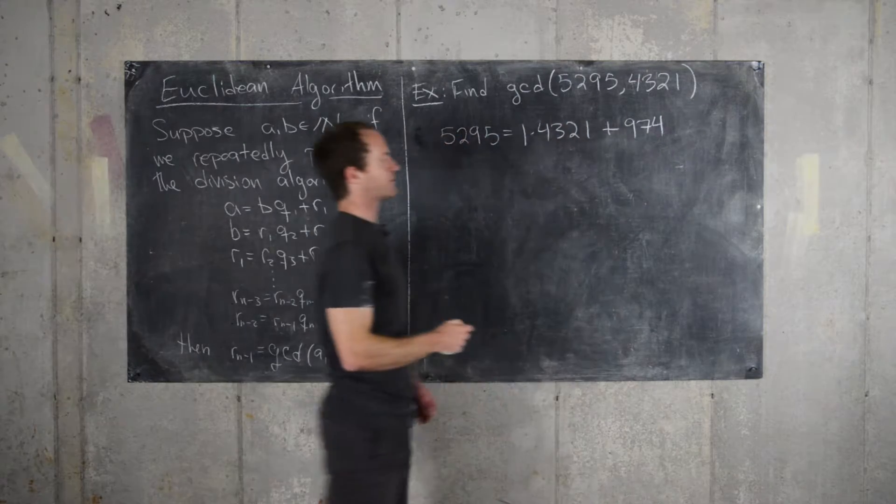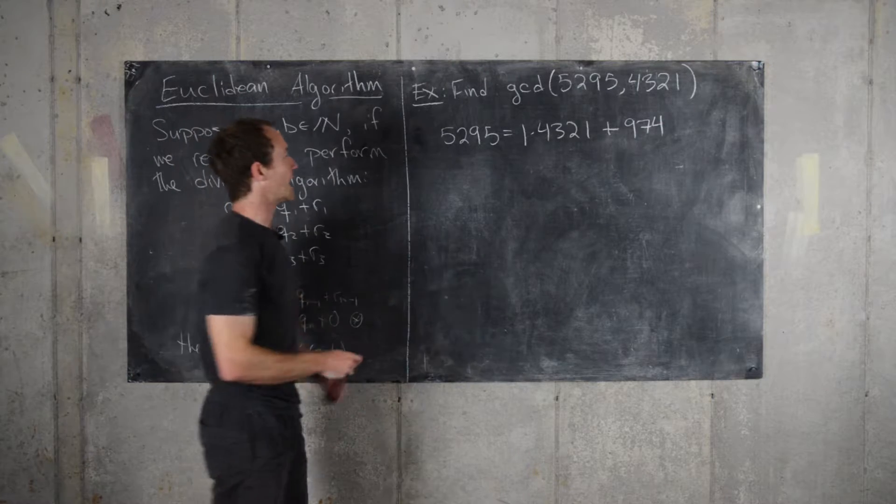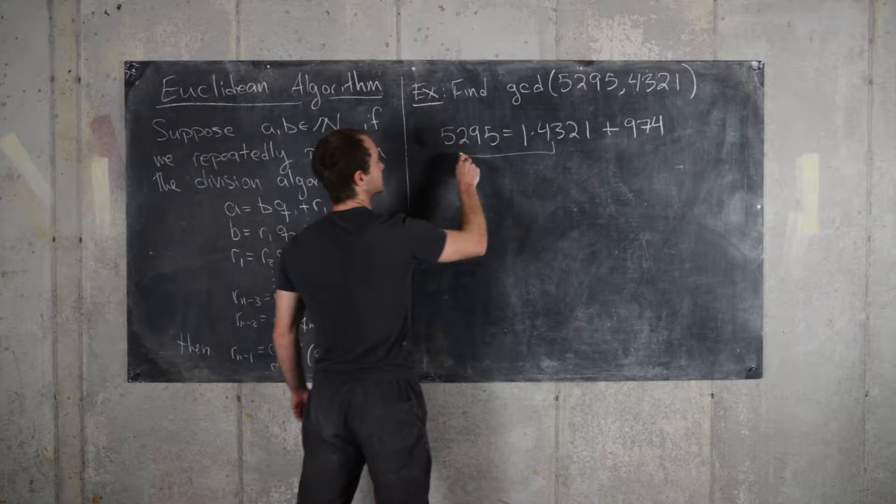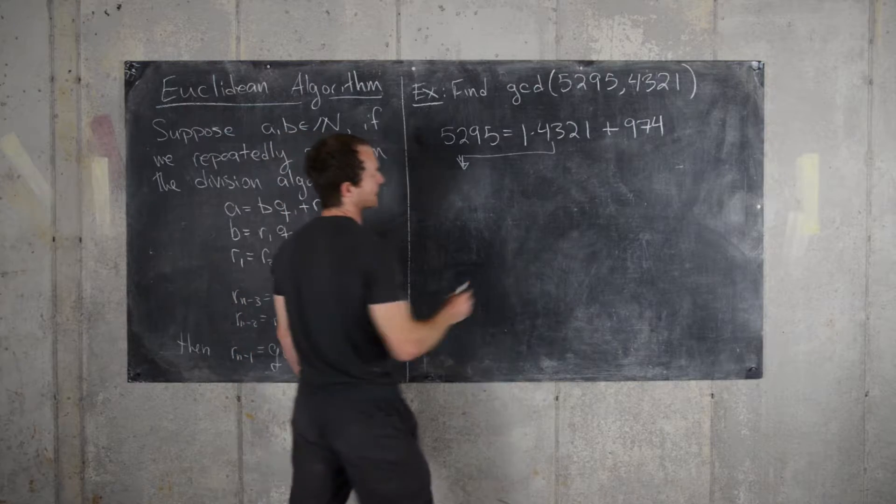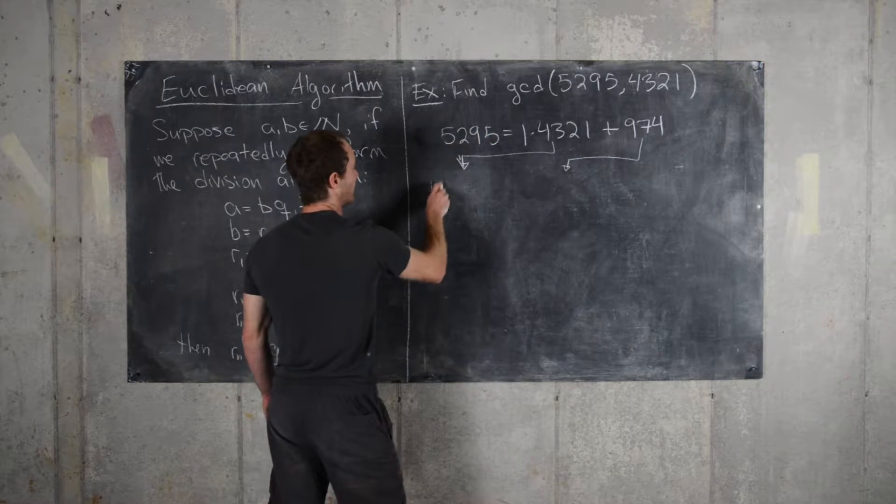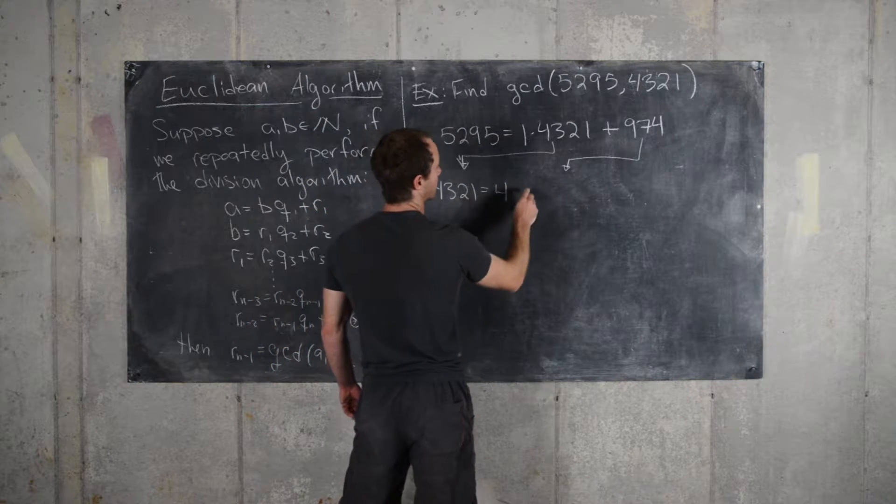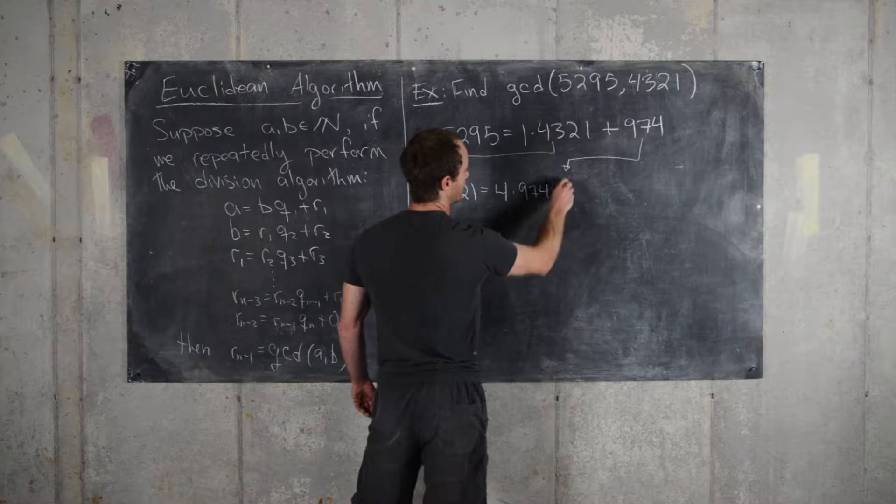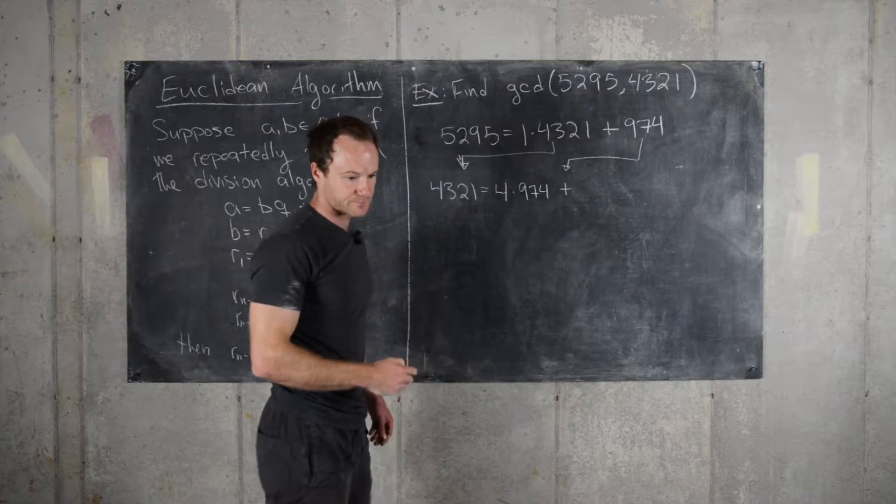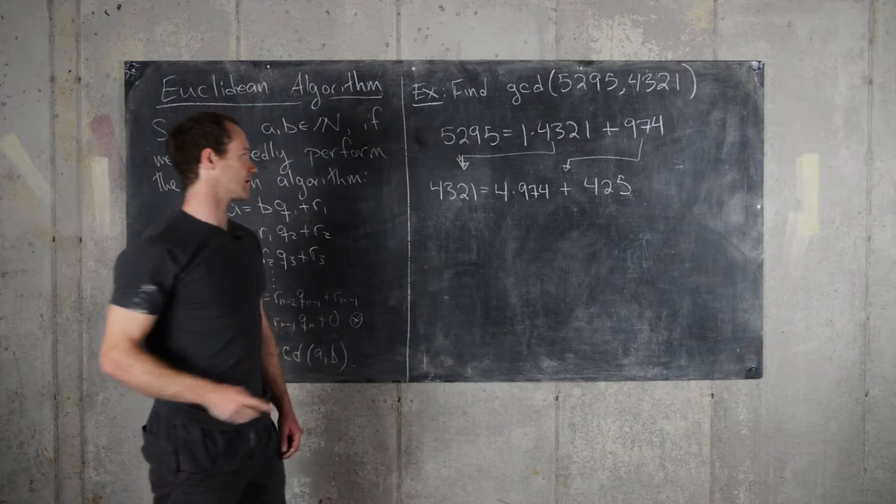So our first remainder is 974, and this will be our quotient. So we'll get 4,321 equals 4 times 974 plus 425. So that's our next remainder.